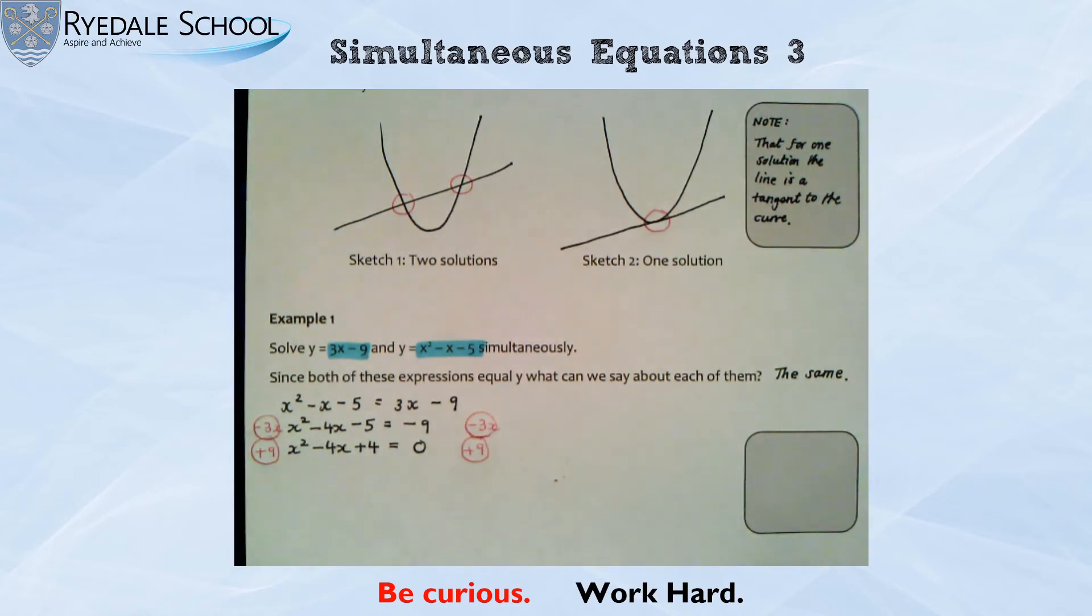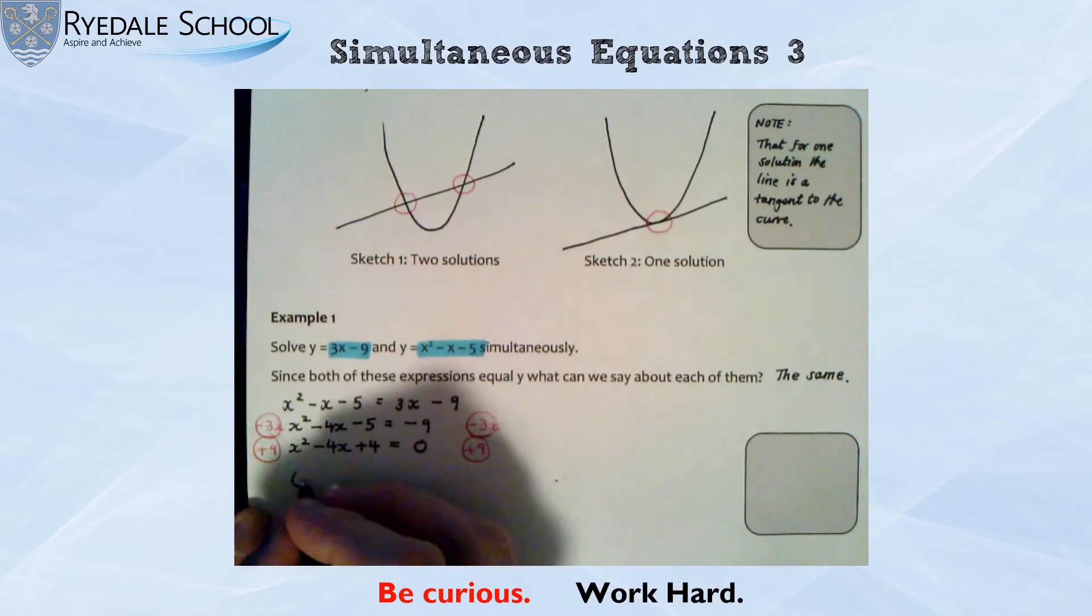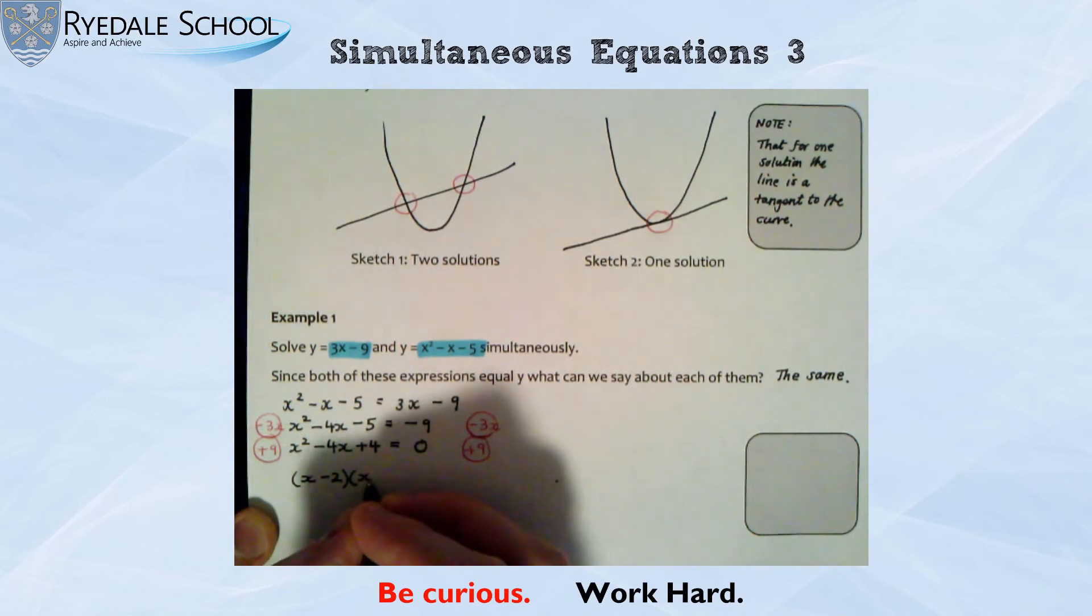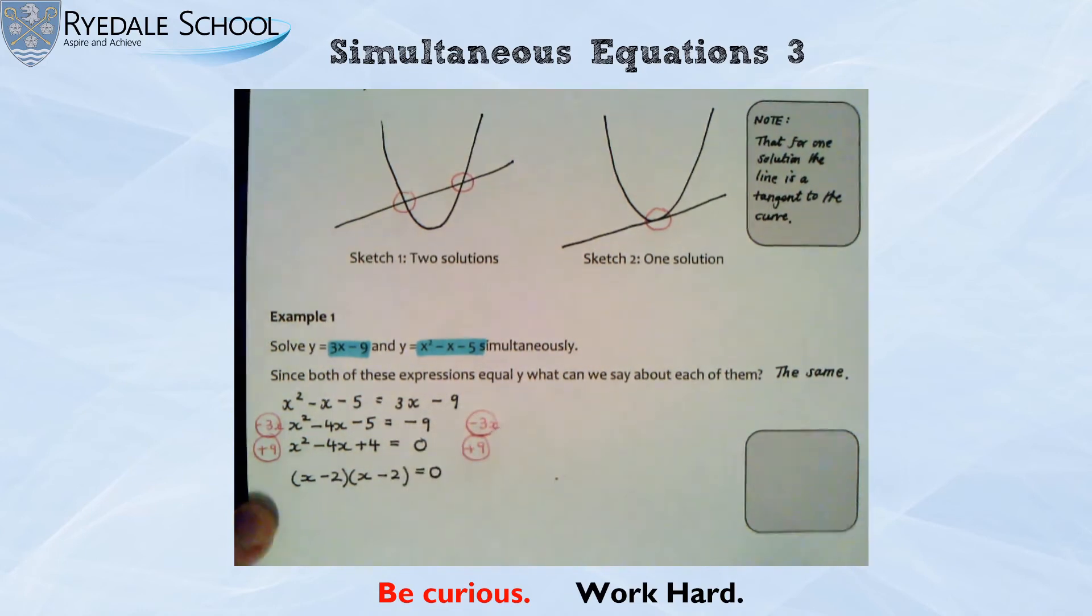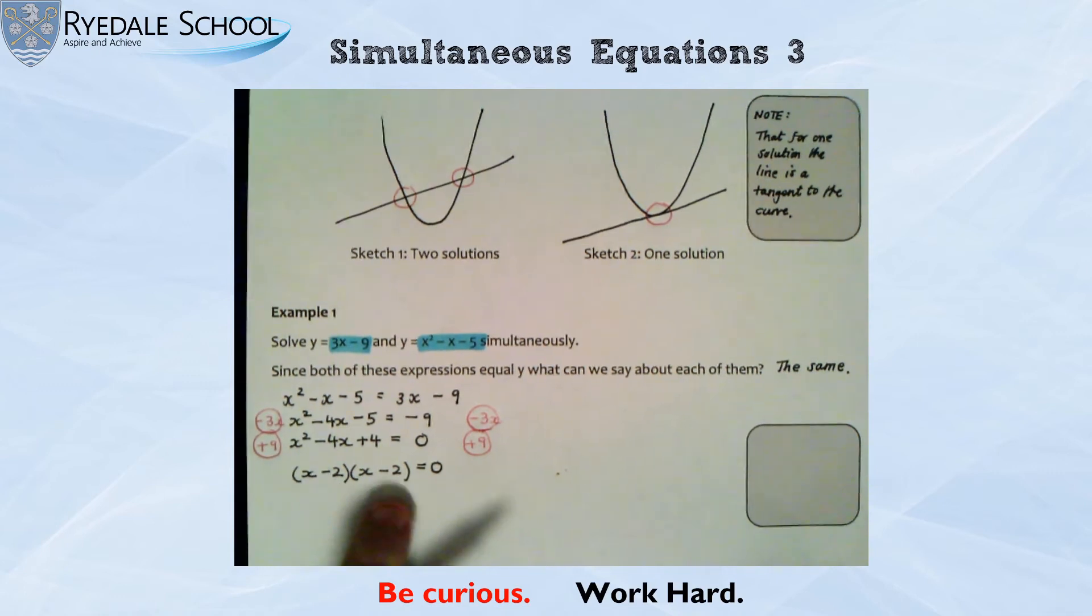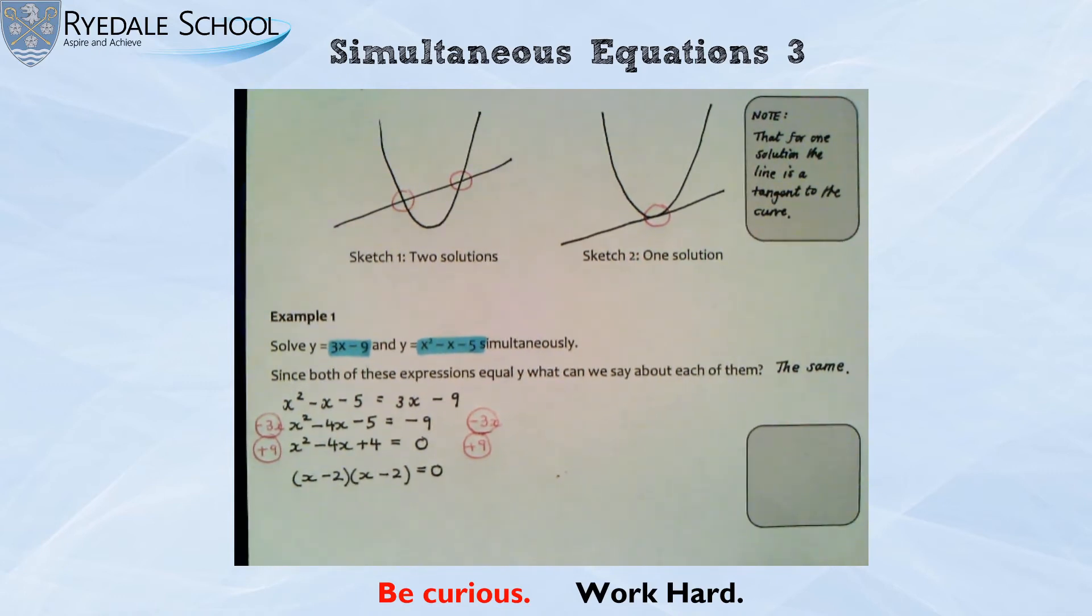So we should know how to solve quadratic equation. We've got different methods. But the first method that we should always check is, does this one factorize? And it does factorize. I can see that I can do an x take away 2.